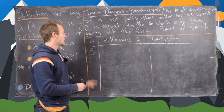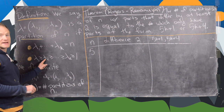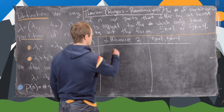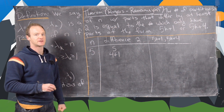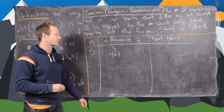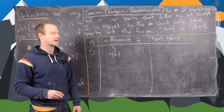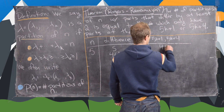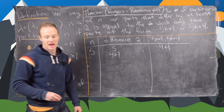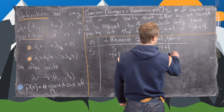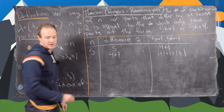For the difference-2 condition, the lambdas cannot be equal and can't even differ by 1 — they must differ by at least 2. For n equals 5: we can have 5, or 4 plus 1 — and those are the only partitions satisfying the difference-2 condition. Notice 3 plus 2 fails because 3 and 2 differ by only 1. For parts of the form 5k plus 1 or 5k plus 4: we have 4 plus 1, and then 1 plus 1 plus 1 plus 1 plus 1. So two partitions on each side.